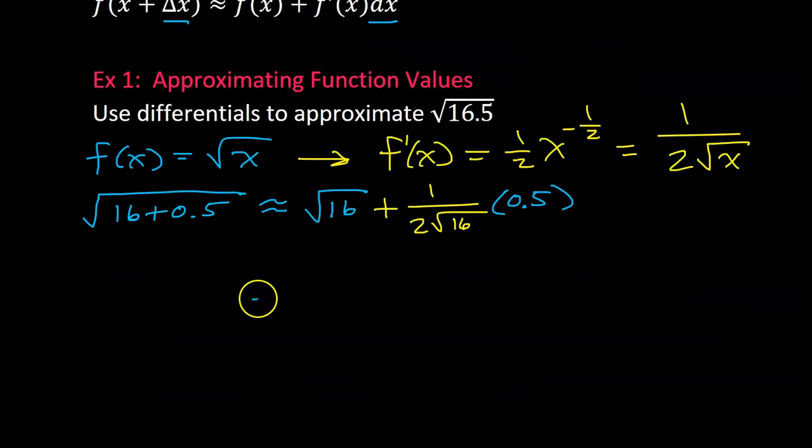So this is going to be approximately equal to the square root of 16 is 4. And then let's simplify this down a little bit. The square root of 16 is 4 again. So that's going to be 2 times 4, which is 8. And we still have this 0.5.